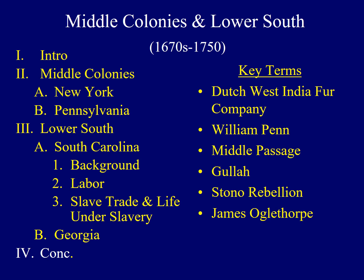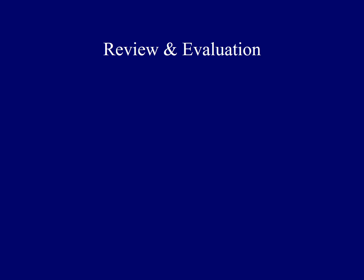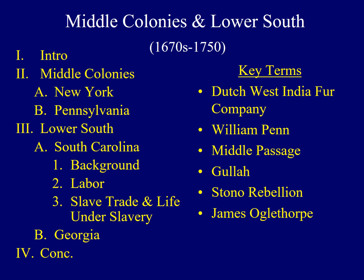We will now review some of the important concepts addressed in this lecture. This lecture has traced the early history of the Middle Colonies, including New York and Pennsylvania, as well as colonies of the Lower South, particularly the Carolinas and Georgia. You should now be able to compare and contrast key events and people which shaped these regions, describe the history of the African slave trade, and describe the ways in which different slaves acted and reacted to their enslavement. This concludes lecture number four. I hope you found this information to be interesting, and the next few slides will offer hyperlinks to additional sources of information as well as lists of sources used for this presentation. Have a great day!